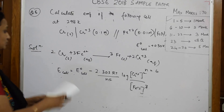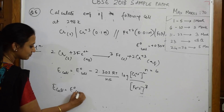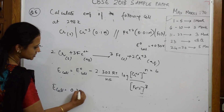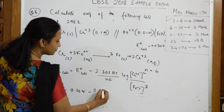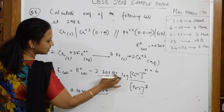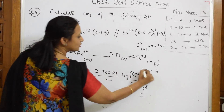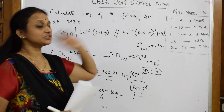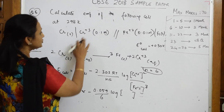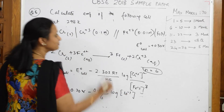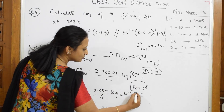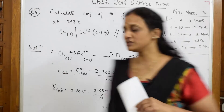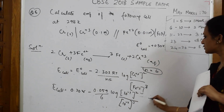Substituting: E_cell = E°_cell − (0.059/6) × log([Cr³⁺]² / [Fe²⁺]³). E°_cell is given as 0.30 V. The chromium concentration is 0.1 = 10⁻¹, the iron concentration is 0.01 = 10⁻², with their respective coefficients 2 and 3 as powers. Substitute and simplify.